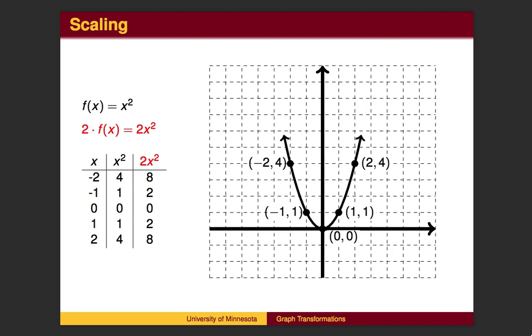What happens when we multiply by 2? In this case, the y values in the middle column are doubled to get the values in the right column. This has the effect of making the graph twice as tall. Each red dot has a y value twice the value of the corresponding black dot.